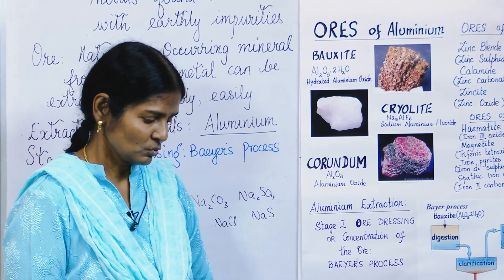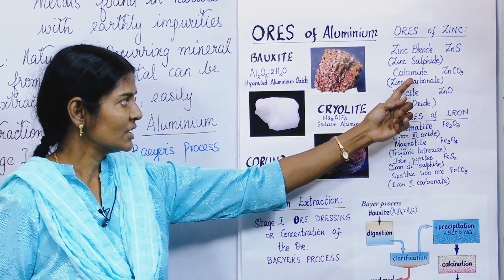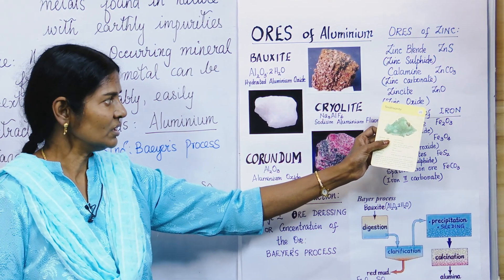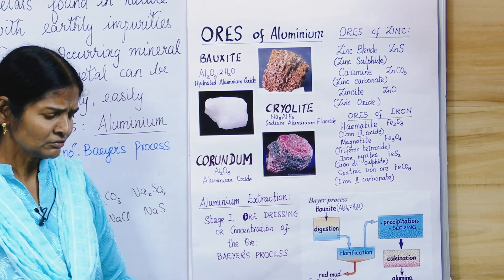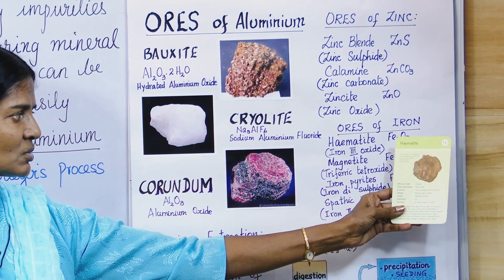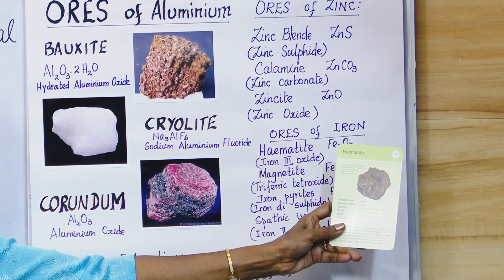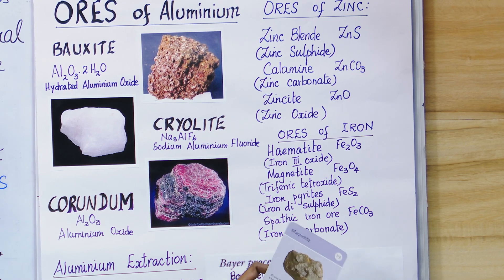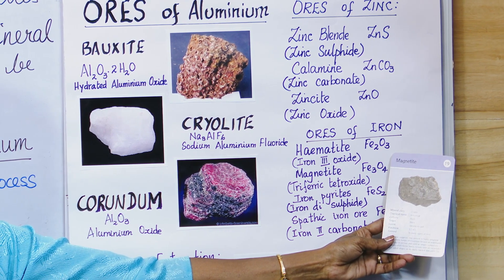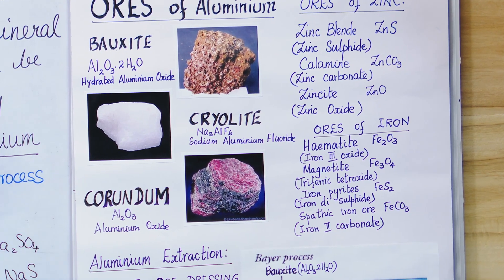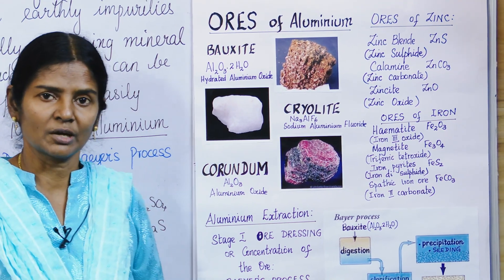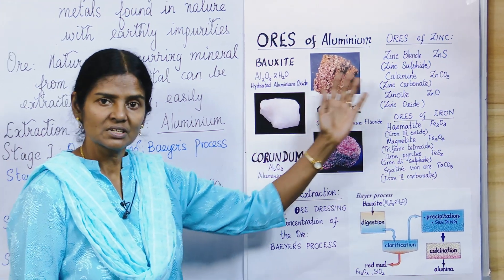Coming to the ores of zinc: zinc blende is zinc sulphide (ZnS), calamine is zinc carbonate (ZnCO₃), and then you have zincite which is zinc oxide (ZnO). For the ores of iron: hematite is Fe₂O₃ (iron 3 oxide), magnetite is Fe₃O₄ (triferric tetroxide) and is black and dull in colour, iron pyrites from which you can prepare sulphuric acid, and spathic iron ore which is iron(II) carbonate.